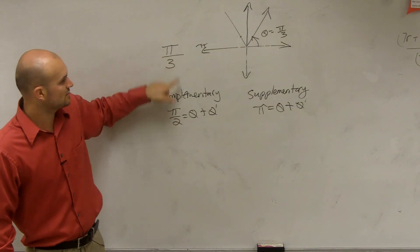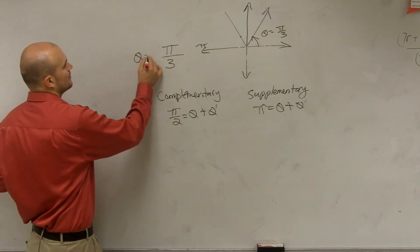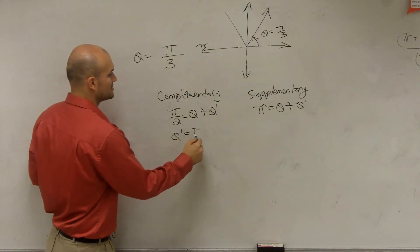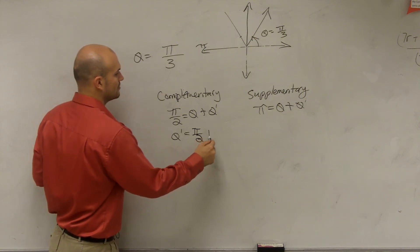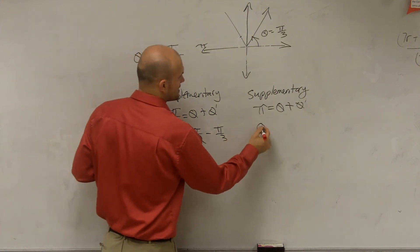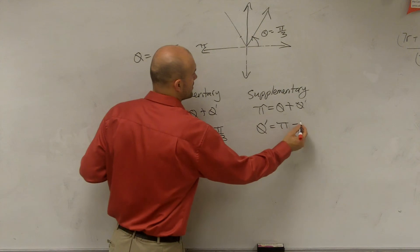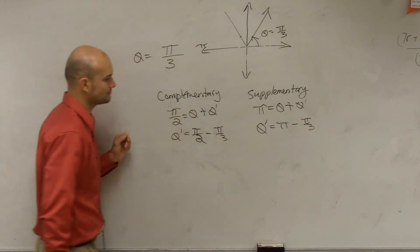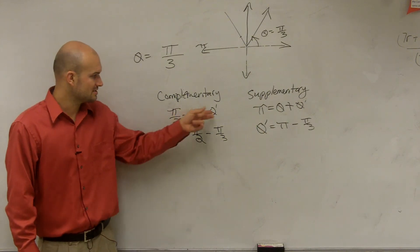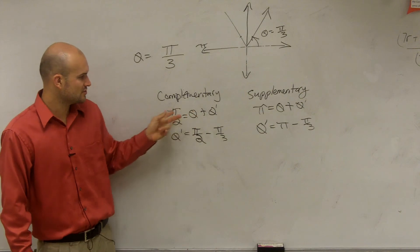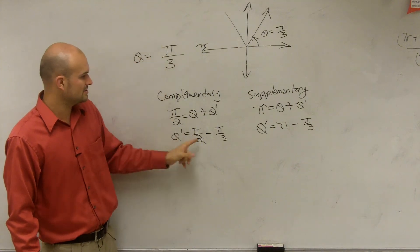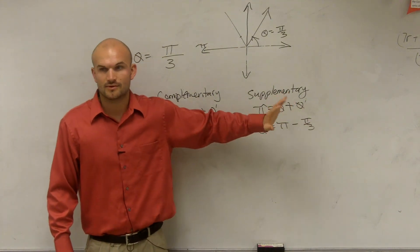So let's say I'm given one angle, which we said was π over 3. Let theta equal π over 3. Therefore, I can say theta prime equals π over 2 minus π over 3 for the complement. And you could say theta prime equals π minus π over 3 for the supplement. Does everybody see how I manipulated the equations? I just solved for theta prime, so I subtracted theta from both sides, and instead of writing theta, I substituted in π over 3.